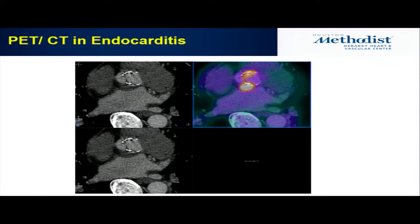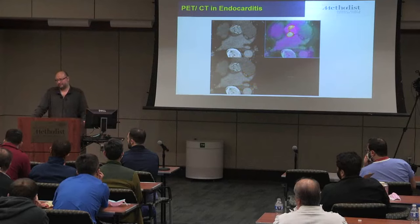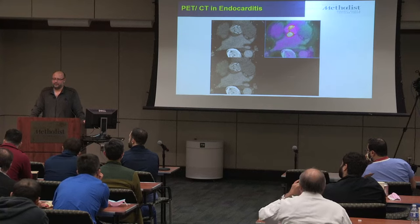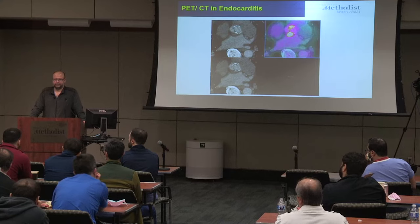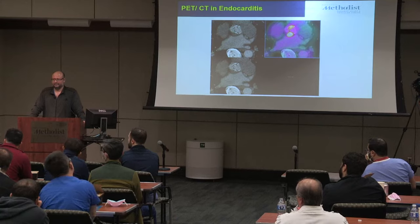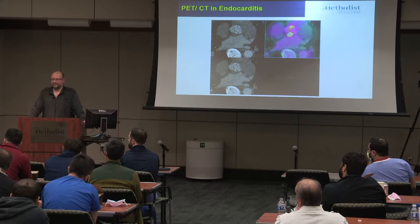Recommendations: For native valve endocarditis, ECHO and TEE remain your primary tools. For prosthetic valves — if there is clinical suspicion of endocarditis but nothing impressive on TEE — that is an indication for PET. Especially for metallic valves where echo struggles from reverberation artifacts. Also useful for differentiating thrombus on a pacemaker lead from infection.